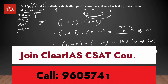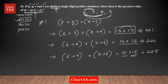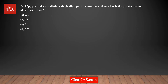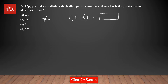That was approach one, where we listed different possible scenarios and found which gives the maximum product. The second approach recognizes that we have a product of two sums — (p + q) multiplied by (r + s) — and we need to maximize that product.